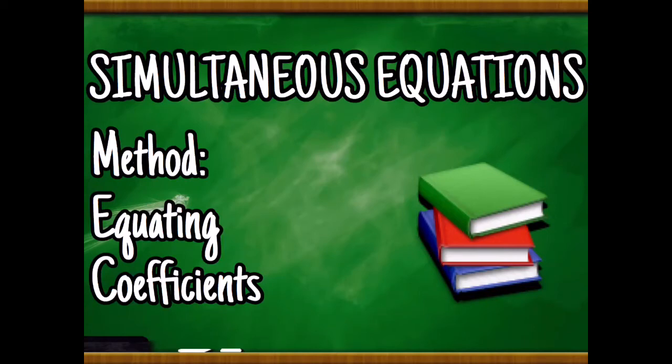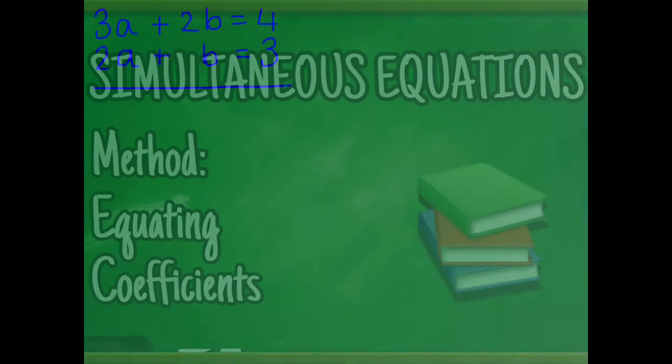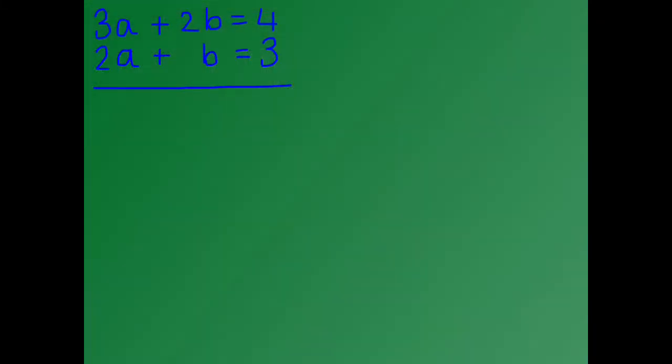This video is about how to solve simultaneous equations, and the way I'm going to do it is by equating coefficients. Simultaneous equations are sets of algebraic equations, and we are asked to find the unknowns. So the question is as follows: 3a plus 2b equals 4, and 2a plus b equals 3.